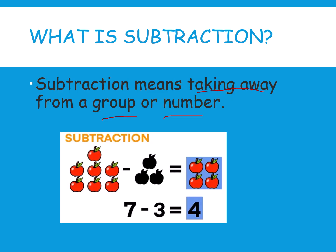Here is an example. We have seven apples and we take away three apples. What is the answer? How many apples are left? See: one, two, three — if you cross out three, how many are left? One, two, three, four. Seven minus three equals four.